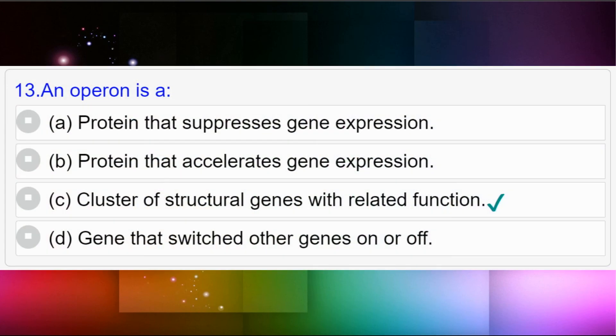Question number thirteen: An operon is — option A: a protein that suppresses gene expression; option B: a protein that accelerates gene expression; option C: a cluster of structural genes with related function; option D: a gene that switches other genes on or off. Answer to question number thirteen is option C: a cluster of structural genes with related function.